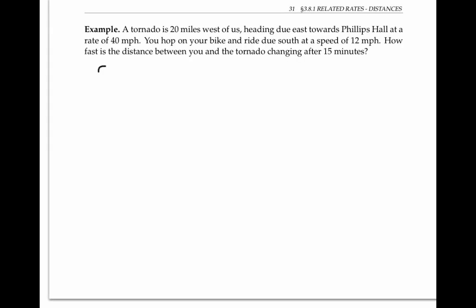A tornado is 20 miles west of us, heading due east towards Phillips Hall at a rate of 40 miles per hour. You hop on your bike and ride due south at a speed of 12 miles per hour. How fast is the distance between you and the tornado changing after 15 minutes?